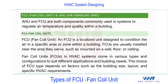FCU and AHU are both commonly used to regulate temperature and air quality within a building — this is related to the air side system. FCU can be considered the smaller unit, and AHU as the bigger version of FCU. Both are used for cooling or heating depending on the type of coil and the system connected — chiller for cooling, boiler for heating, or VRF heat pump for both simultaneously.